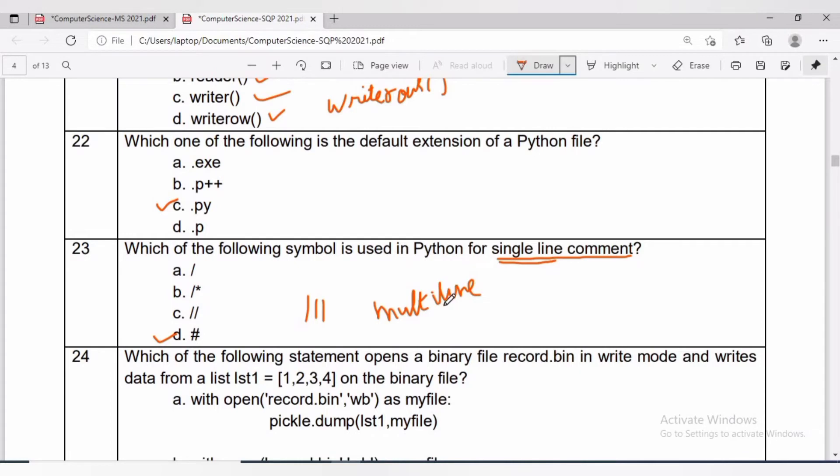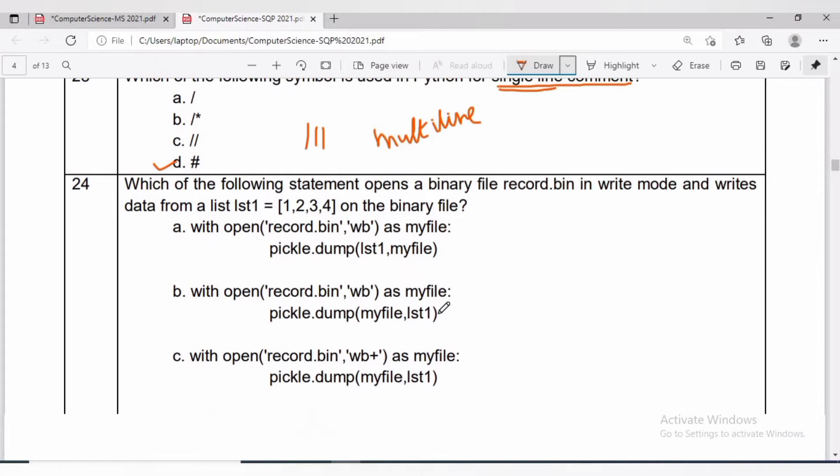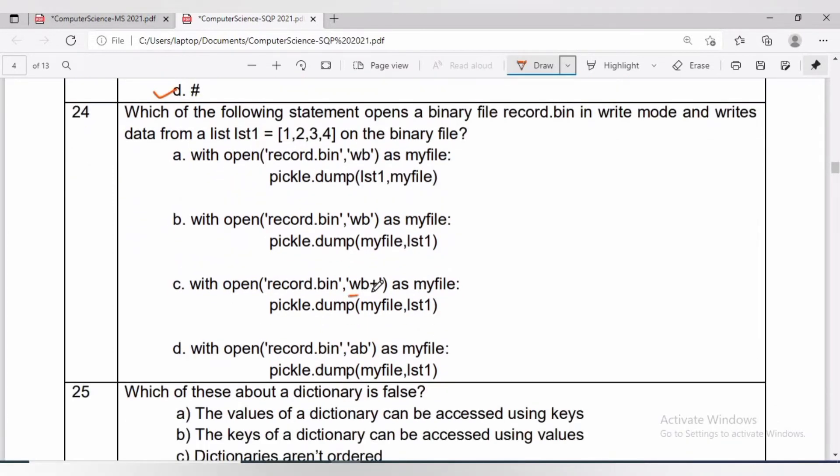In question number 24, it opens a binary file record.bin in write mode and writes data from a list.